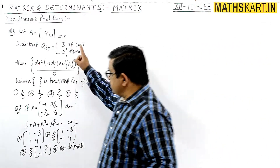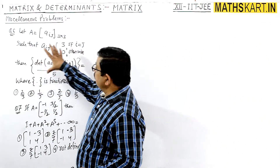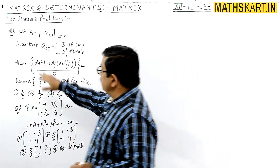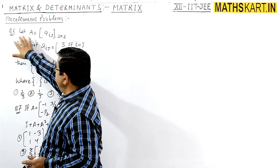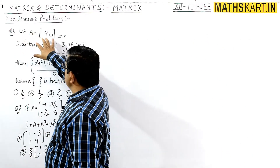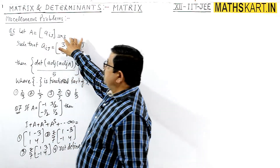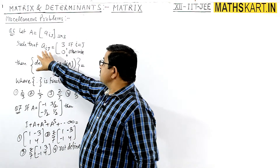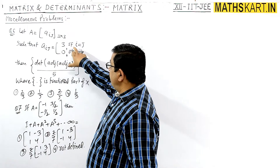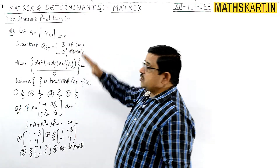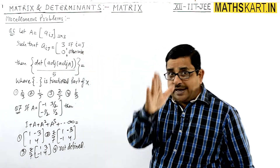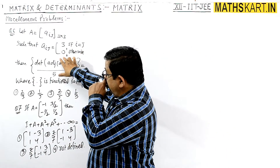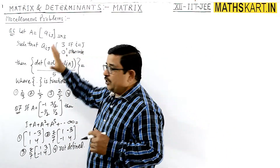Question number six and seven — there are two questions in miscellaneous problems. In question six, a 3×3 order matrix A is given where the general element aij equals 3 if i equals j, and otherwise it is zero. So i equals j means on the diagonal, and off-diagonal elements are zero.